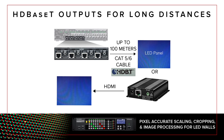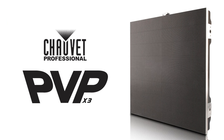Equipped with standard HDMI or built-in HDBaseT outputs, the Roland XS series allows you to send your mixed audio and video signal over a network cable up to 328 feet to your LED wall driver. Today we are going to be connecting to the Chauvet PVP-X3, which is a 3.9mm video wall panel system.